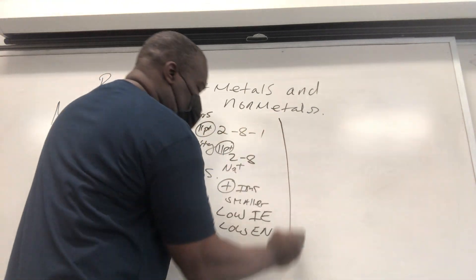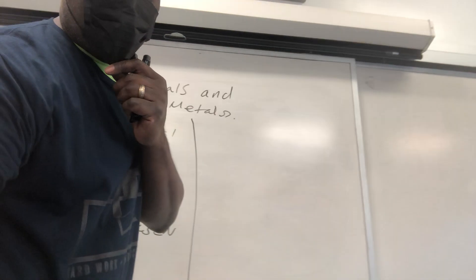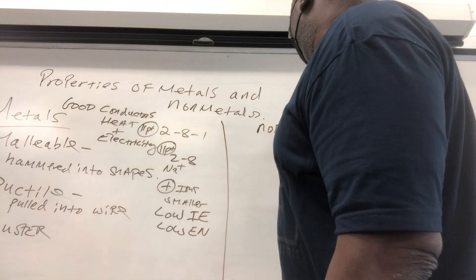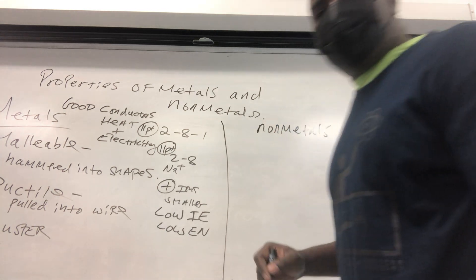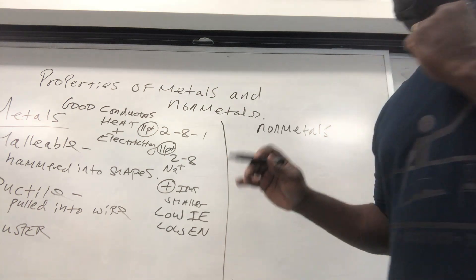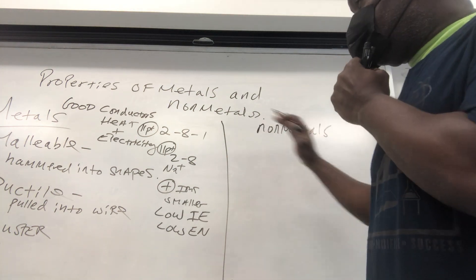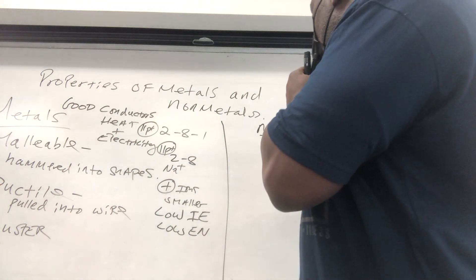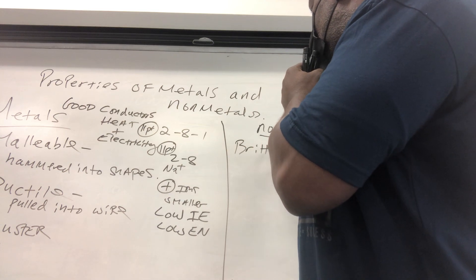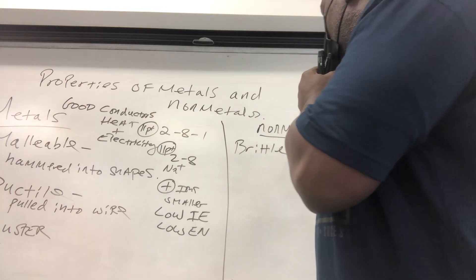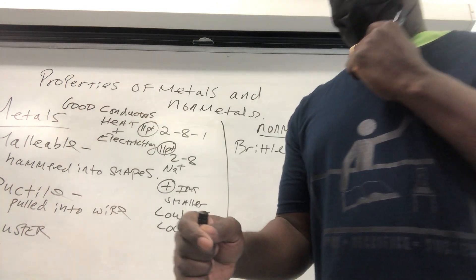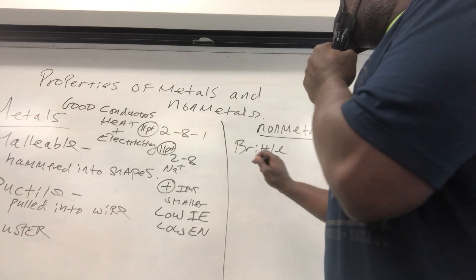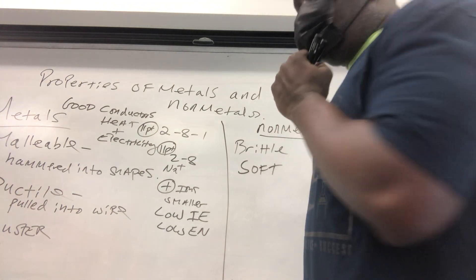Now let's look at non-metals. Non-metals tend to have many opposite characteristics to metals. Non-metals tend to be brittle. When you hit them, they don't bend into nice shapes. They tend to fracture or crumble. Non-metals also tend to be soft compared to metals.